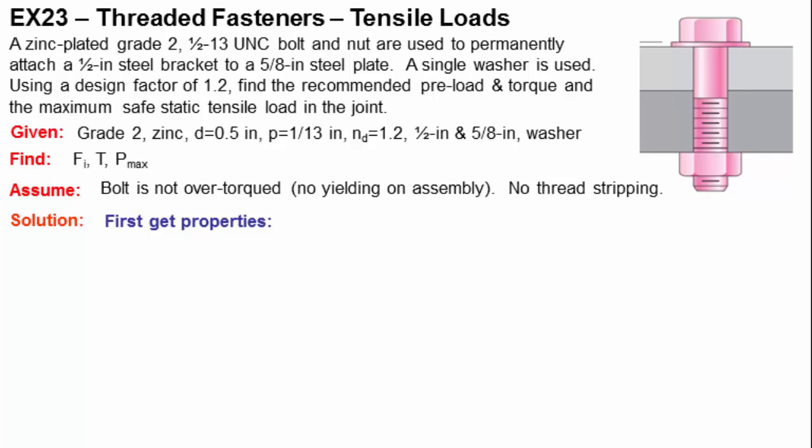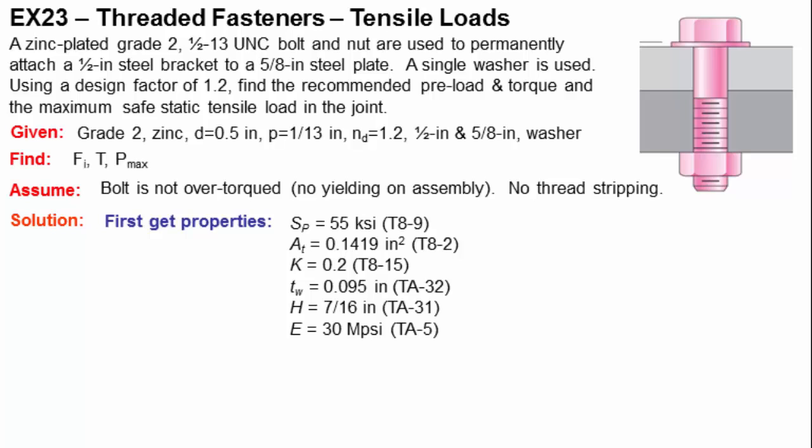In other words, that the bolt is not over-torqued or yielded during assembly, and we're also going to assume that thread stripping doesn't occur during assembly as well. For our solution process, we're going to start out by identifying the appropriate properties. We need to do some looking around for these, because they come from different places. As you can see here, we're going to find the proof strength from table 8-9, and for a grade 2 bolt, that's 55 KSI.